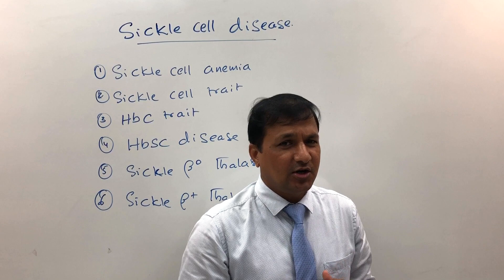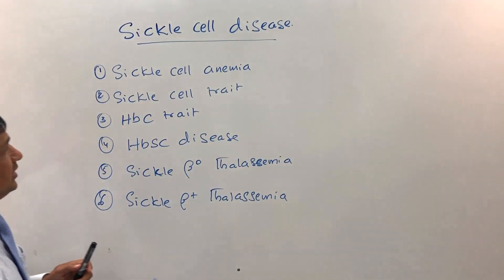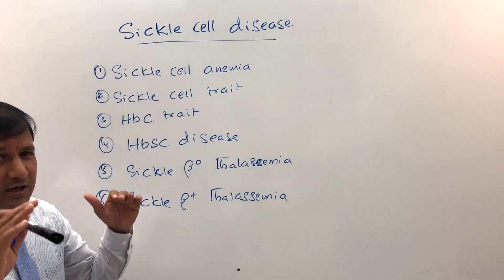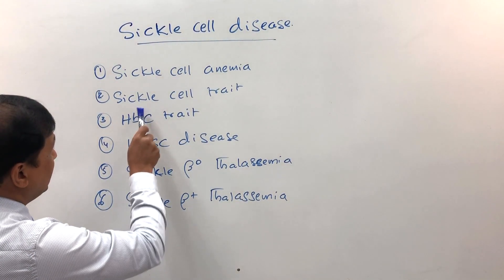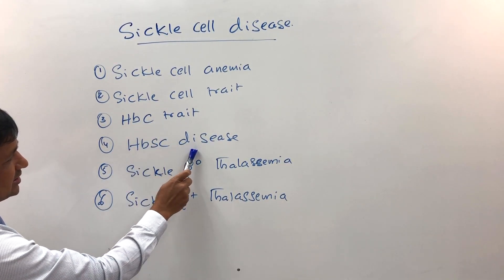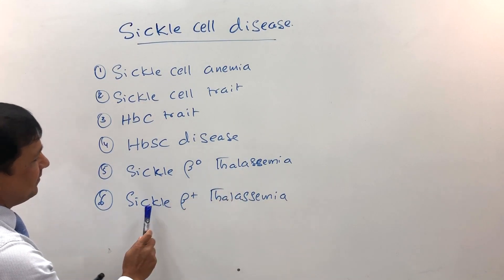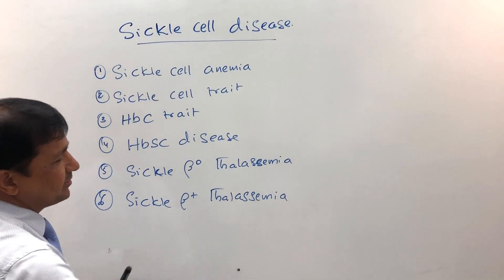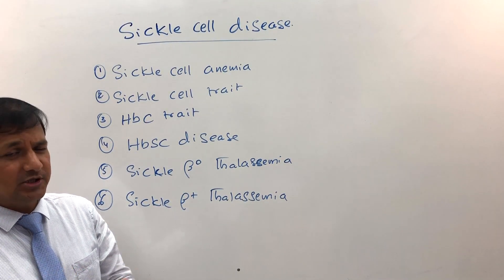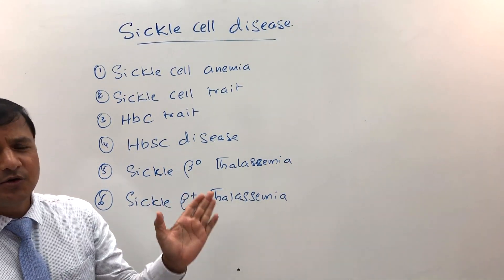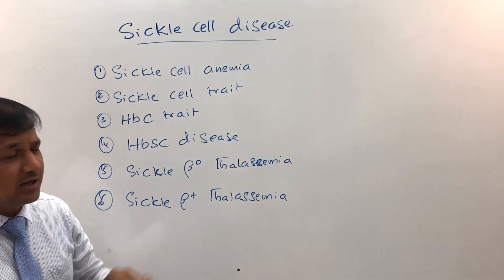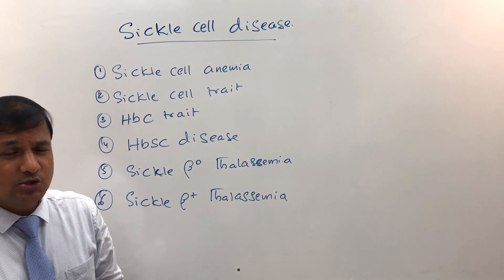I have listed all those disorders here. Under sickle cell disease we see: sickle cell anemia — I have made a video on that and the link is available in the description — sickle cell trait, HbC trait, HbSC disease, sickle beta-0 thalassemia, and sickle beta-plus thalassemia. I'll briefly go over all these without too much detail, as separate videos will be available soon.